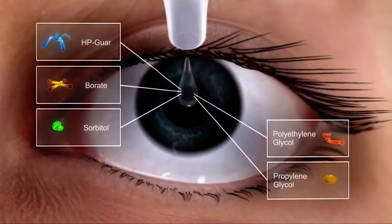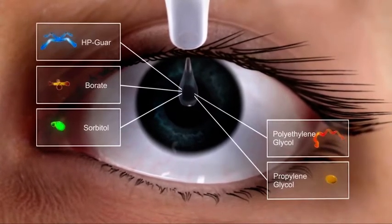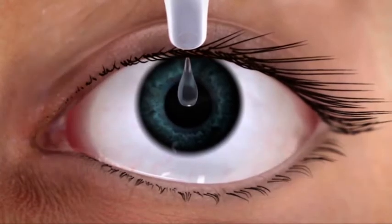As this intelligent delivery system interacts with the tear film, the pH adjusts to the natural pH of the eye, optimizing the viscosity of the solution.